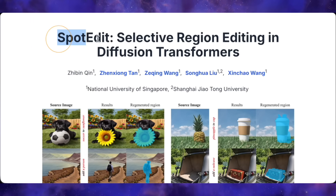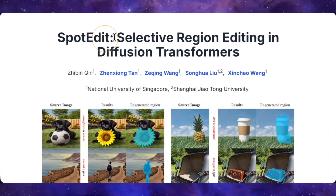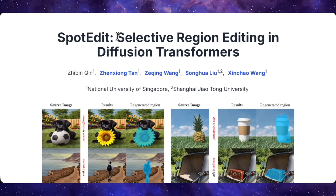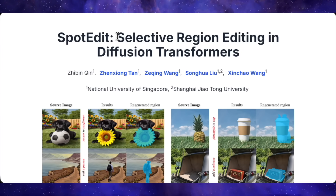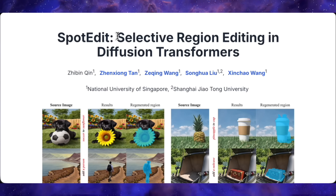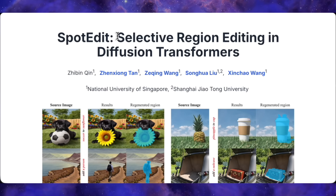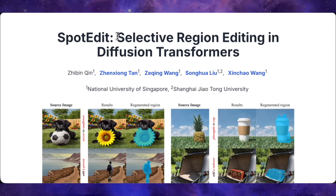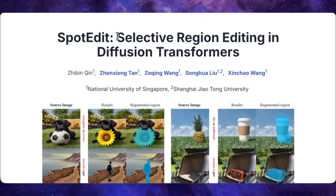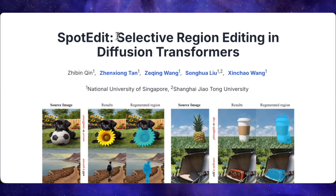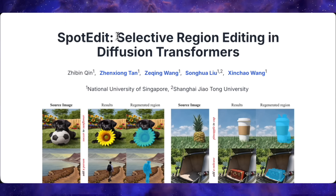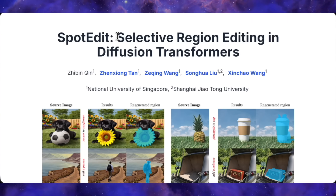First up, we've got Spot Edit, and this one's actually pretty clever. Normally when you edit an image with AI, the entire image gets regenerated from scratch, even the parts you don't want to change. Spot Edit flips that on its head — it only edits the specific region you want to modify and leaves everything else completely untouched. Let me show you what I mean.